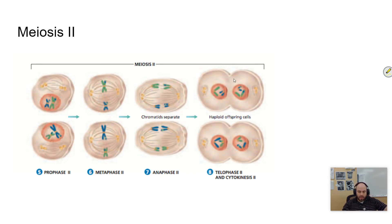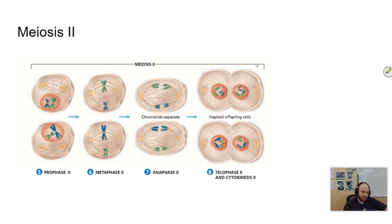Each one of those cells could combine with a gamete from another individual who is also making four cells. Combining those two gives you a new diploid organism with 23 complete pairs — if everything goes correctly. We will talk about some instances in which this won't happen correctly.